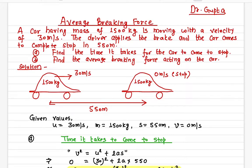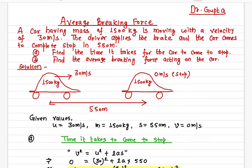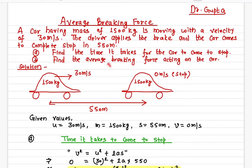The driver applies the brake and the car comes to a stop in 550 meters. At this point the car is at complete rest, and the distance it has moved is 550 meters before it comes to a complete stop. We need to find out how long it takes to stop the car and what is the average braking force applied to stop the car.